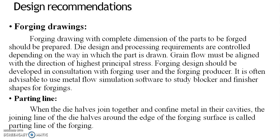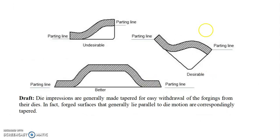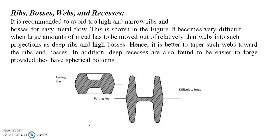We discussed how forging drawings and parting lines should be prepared, how grain flow should be controlled, and the role of parting lines. We reviewed the effect of parting line inclination — at 90 degrees, at 35 to 40 degrees, and when perfectly in line. We also discussed draft considerations and, in the last section, that designs should generally avoid excessively high and narrow ribs and bosses.